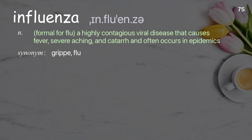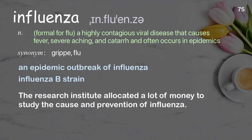Influenza: Formal for flu; a highly contagious viral disease that causes fever, severe aching, and catarrh, and often occurs in epidemics. Examples: An epidemic outbreak of influenza. Influenza B strain. The research institute allocated a lot of money to study the cause and prevention of influenza.